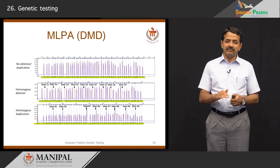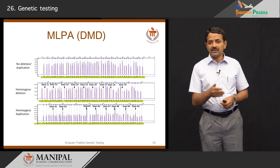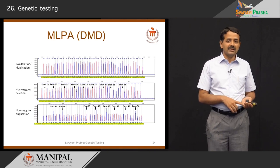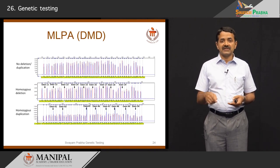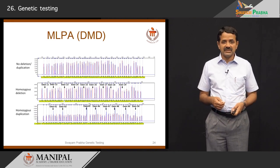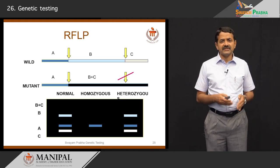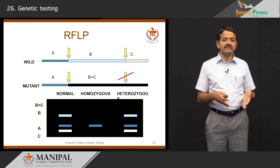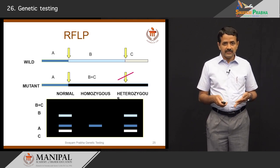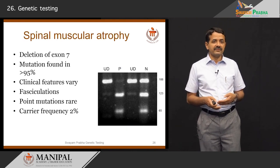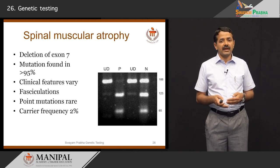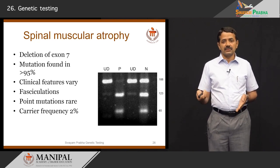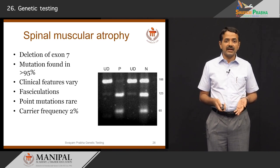Duchenne muscular dystrophy can also be caused by point mutations, which are not detected by multiplex PCR or MLPA — they require sequencing of the entire DMD gene. We also have restriction fragment length polymorphism (RFLP), where a specific nucleotide change affects digestion by a restriction enzyme. This technique is used for spinal muscular atrophy, where deletion of exon 7 and the difference between SMN1 and SMN2 genes produce different bands to show whether an individual is affected.